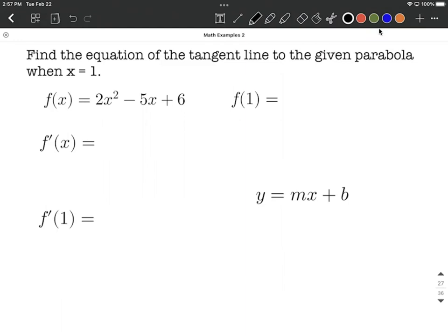We can find the point first by plugging into the original function with the given value. We're going to evaluate f(1). So we have 2 times 1 squared minus 5 times 1 plus 6. From here, simplifying down, this is going to be 2 minus 5 plus 6, which works out to be 3. So our ordered pair is (1, 3).